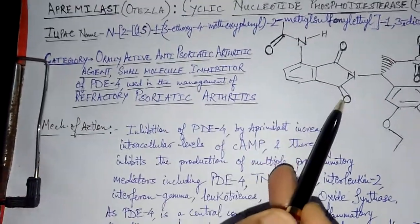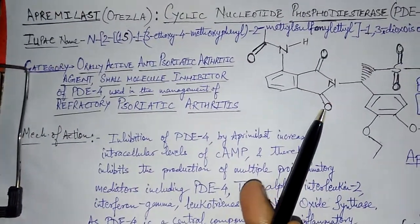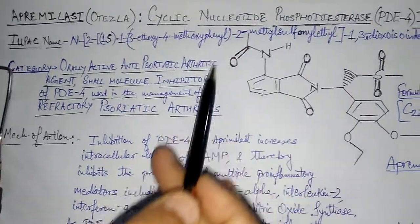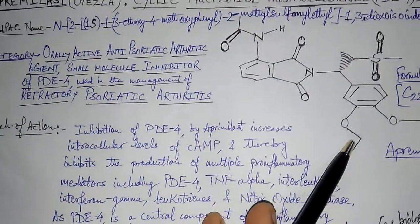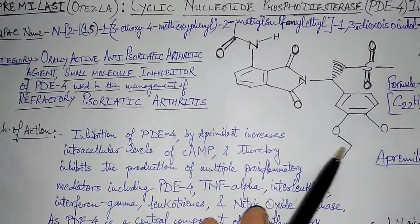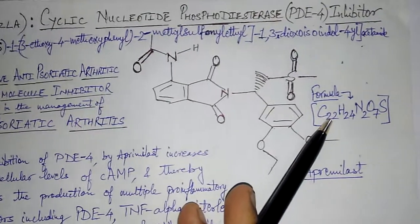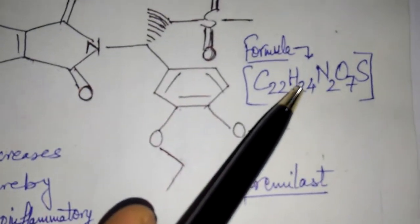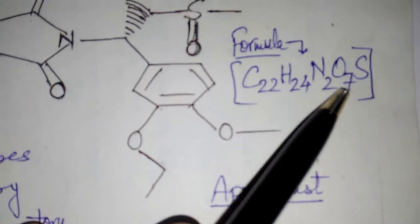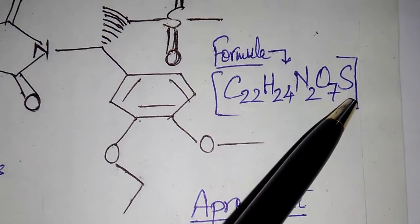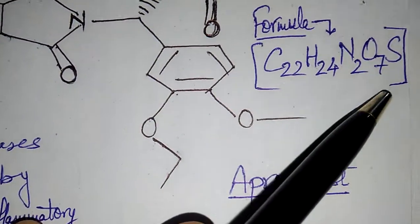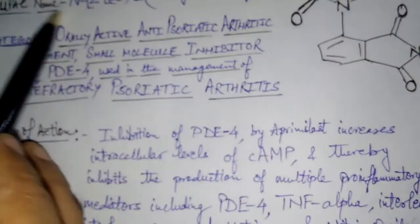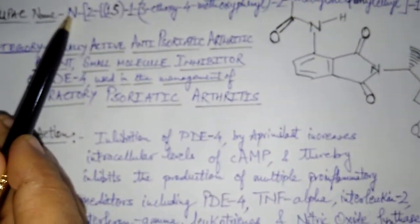This is the molecule of Otezla, or Apremilast. This is the chemical structure of the drug, and its molecular formula is C22H24N2O7S, containing one lone sulfur atom.